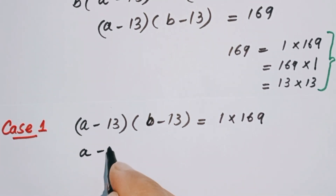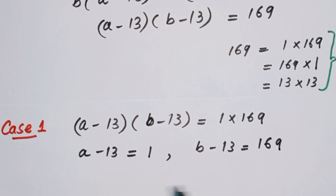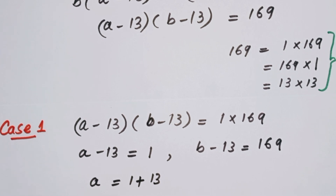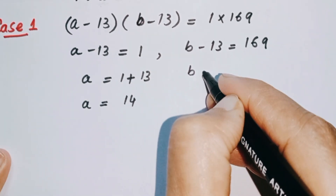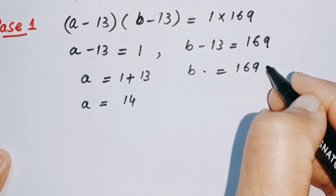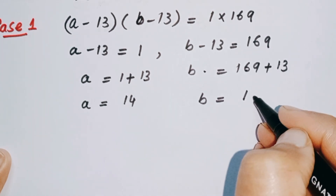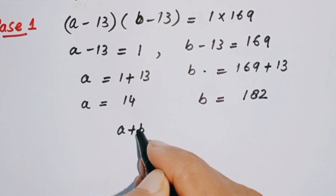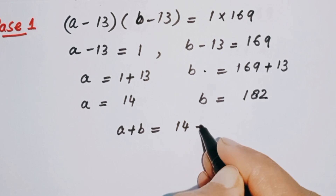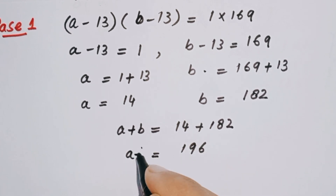Case one: a minus 13 is equal to 1 and b minus 13 is equal to 169. So a equals 1 plus 13, giving a equals 14. And b equals 169 plus 13, giving b equals 182. Therefore a plus b equals 14 plus 182, which is 196.